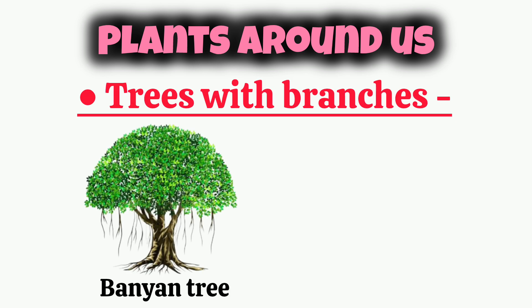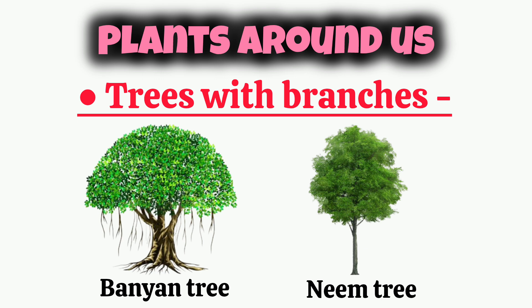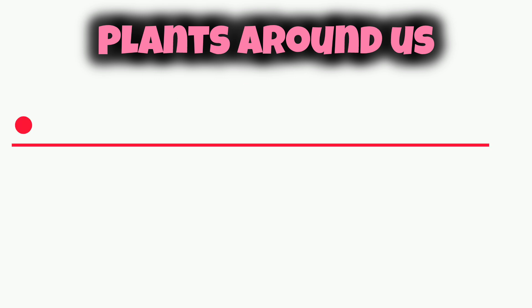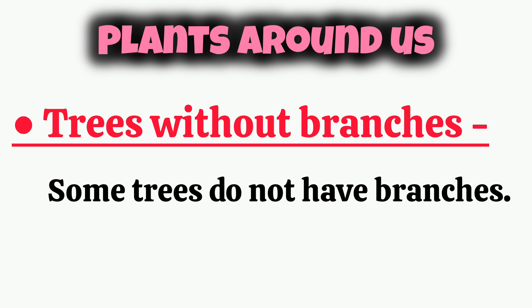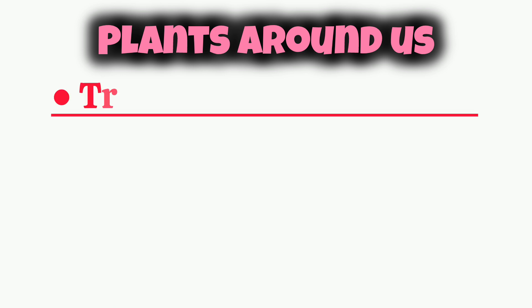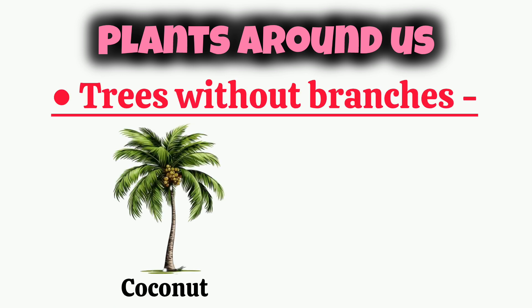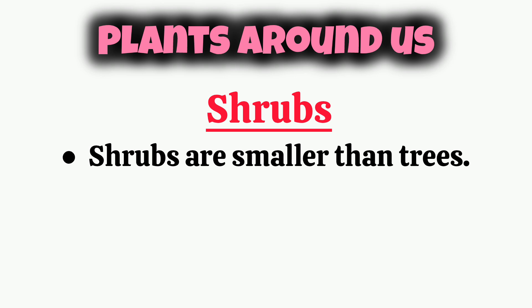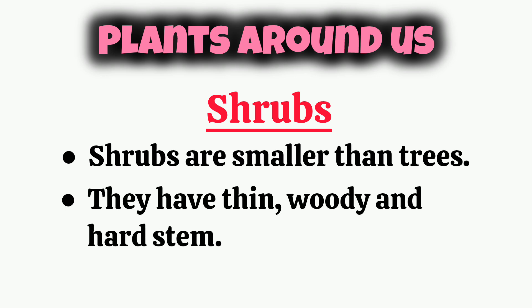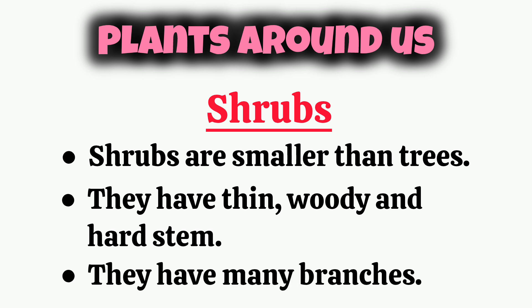Examples of trees include the banana tree and neem tree. Some trees do not have branches, like the coconut and toddy palm. Shrubs are similar to trees but smaller — they have thin, woody, and hard stems with many branches.